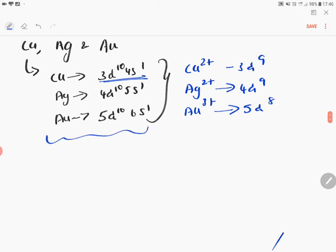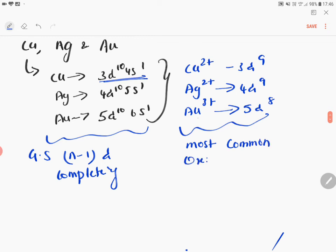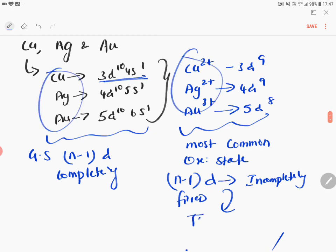In the ground state, the electronic configuration (n-1)d is completely filled. But this is one of the most common oxidation states where (n-1)d is incompletely filled. Therefore, on this basis, these elements are regarded as transition elements.